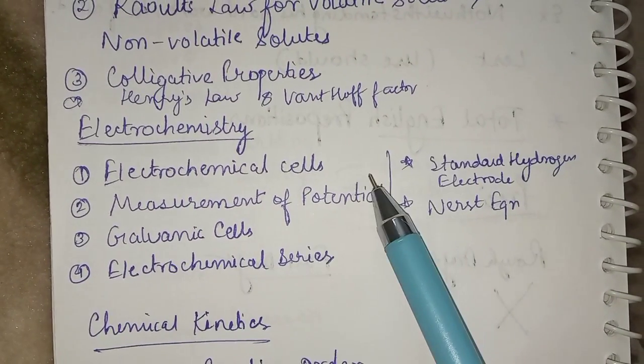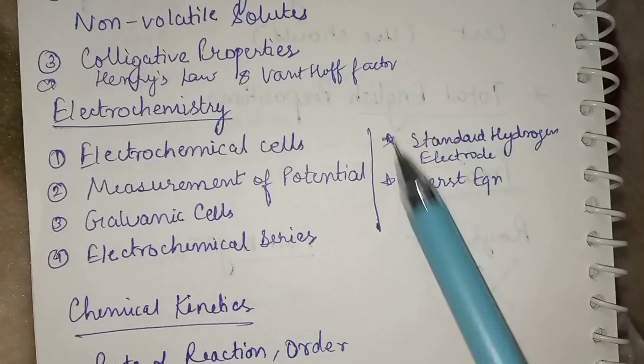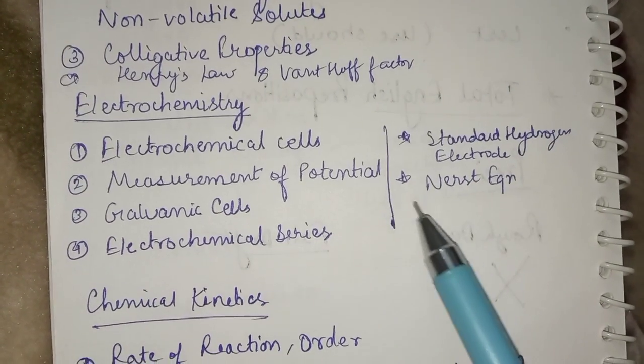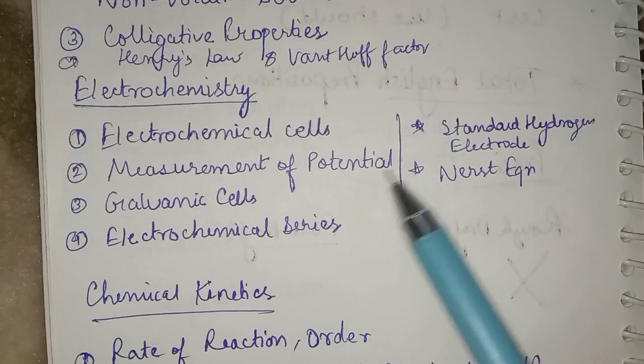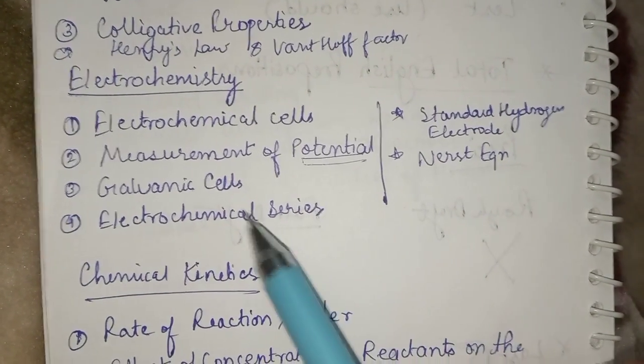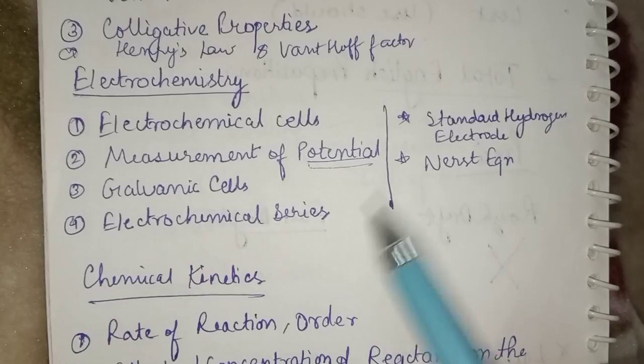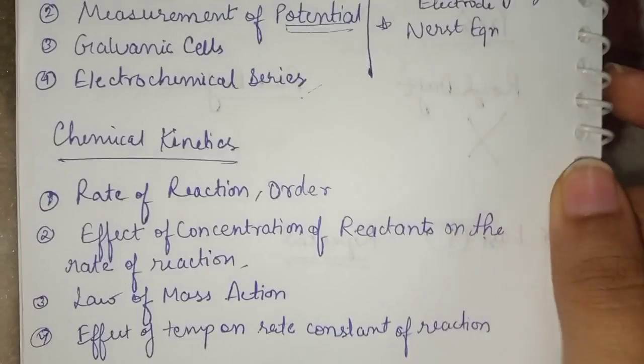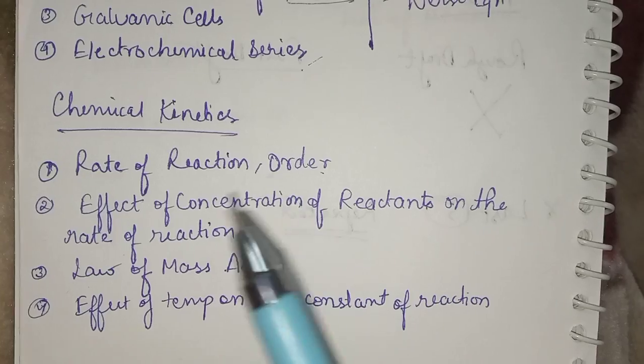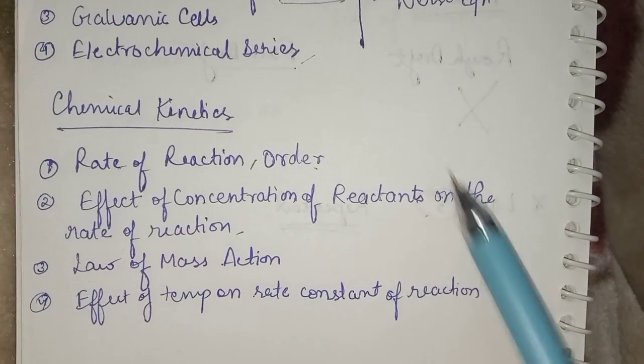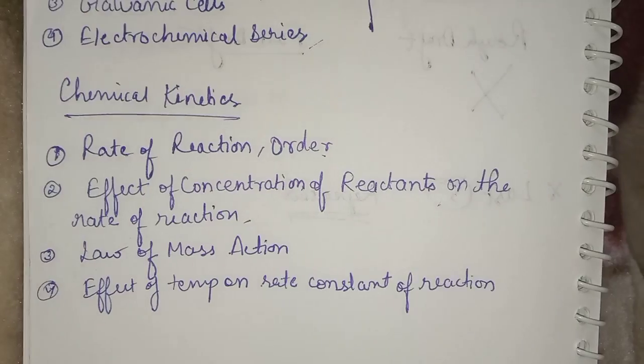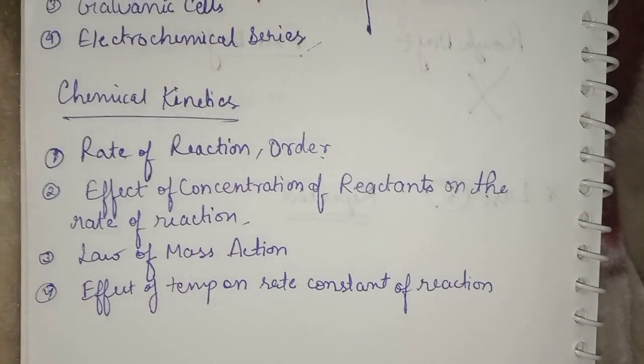Then we have electrochemistry: the electrochemical cells, and there is this very important standard hydrogen electrode. Please have a look here. Nernst equation, then measurement of potential - this is asked every year. Galvanic cells, electrochemical series. For chemical kinetics: rate of reaction, the order of reaction, effect of concentration of reactants on the rate of reaction, the law of mass action, and the effect of temperature on rate constant of reaction.